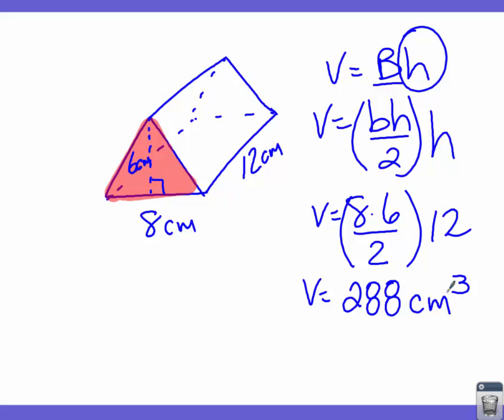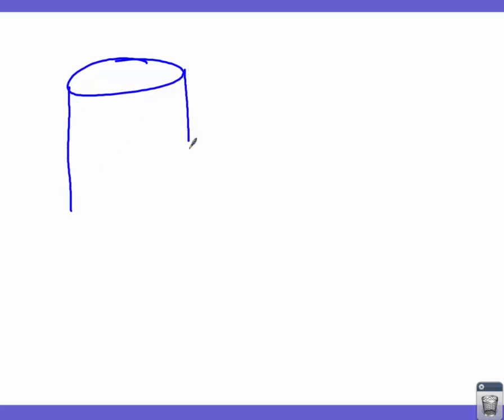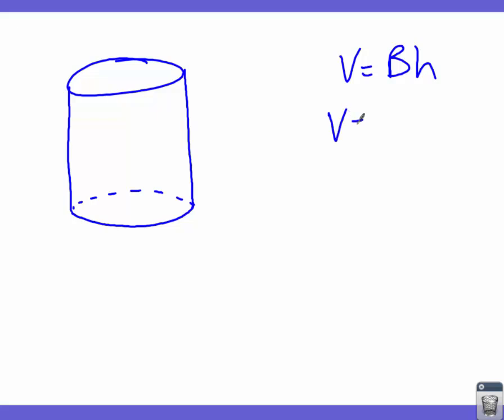That's our triangular prism. Now let's look at the last figure — a cylinder. A cylinder is not a prism because it does not have a polygon for a base, but it does follow the same volume formula, which is why we group them together. A cylinder is like a Coke can. We start with volume equals area of the base times the height, and this time our base is a circle, so we plug in pi r squared and multiply by the distance between the two circles. We need the radius and the height.